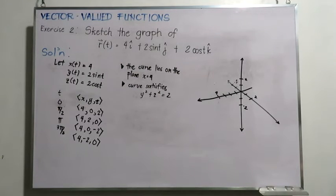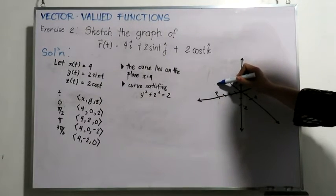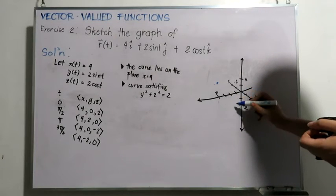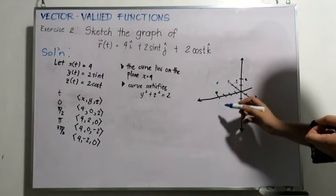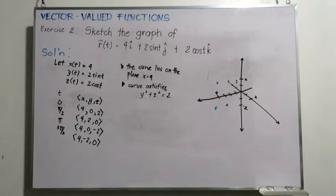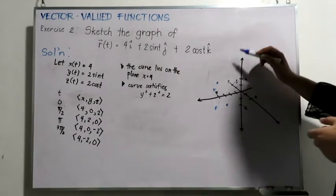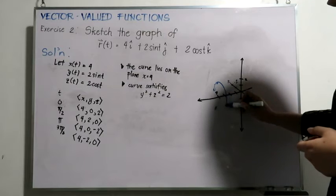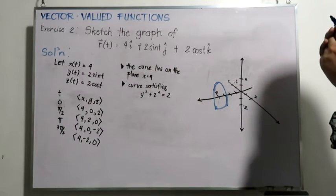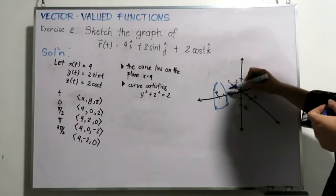Now we may proceed with plotting the sample points. First we have (4, 0, 2), which would be around here. Then we have (4, 2, 0), which would be around here. Then we have (4, 0, negative 2), which would be around here. This drawing is not up to scale, but this should be a circle of radius 2 centered at (4, 0, 0). The direction since we moved from (4, 0, 2) to (4, 2, 0) should be this.